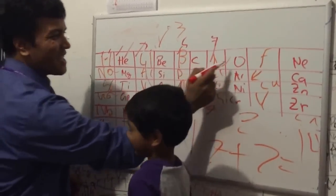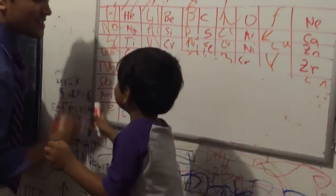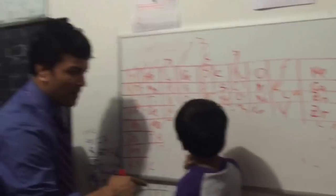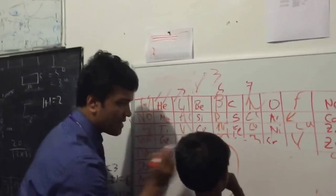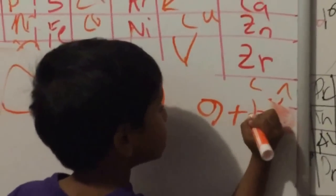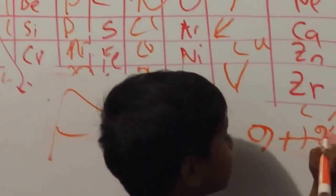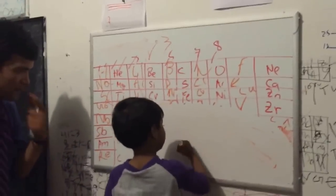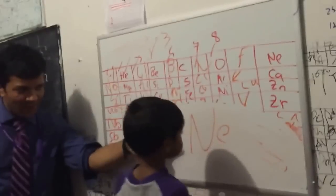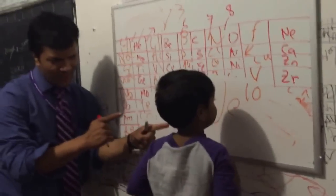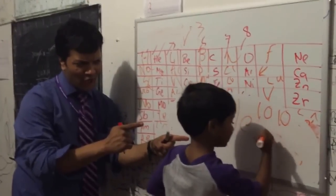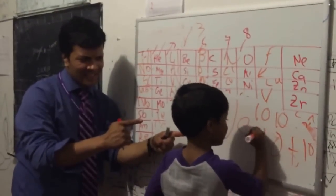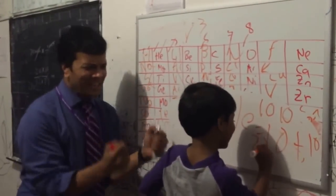What is after nitrogen? Oxygen! We have no time to waste. What is the atomic number for oxygen? Eight. What is the atomic mass for oxygen? Eight plus eight equals eighteen. What is after fluorine? Neon! What is the atomic number for neon? Ten. And how many protons in neon? Ten. What is the atomic mass for neon? Ten plus ten equals twenty.